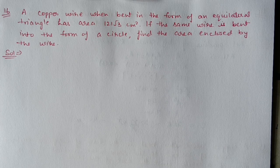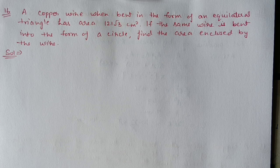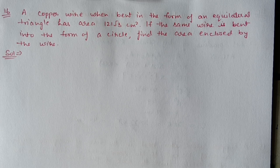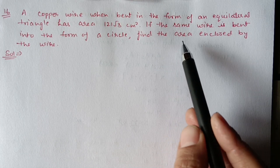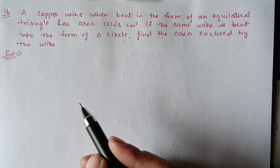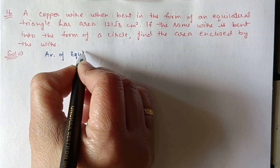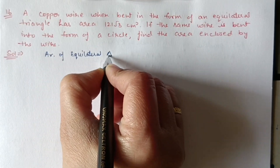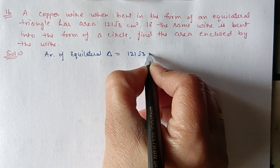Next, we have Question 16. A copper wire when bent in the form of an equilateral triangle has area 121√3 centimeter square. If the same wire is bent into the form of a circle, find the area enclosed by the wire. First, using the given area of the triangle we find the perimeter of the triangle, which will equal the circumference of the circle.